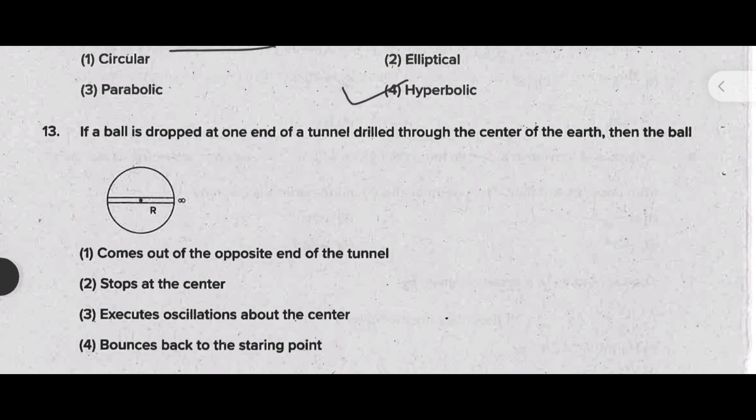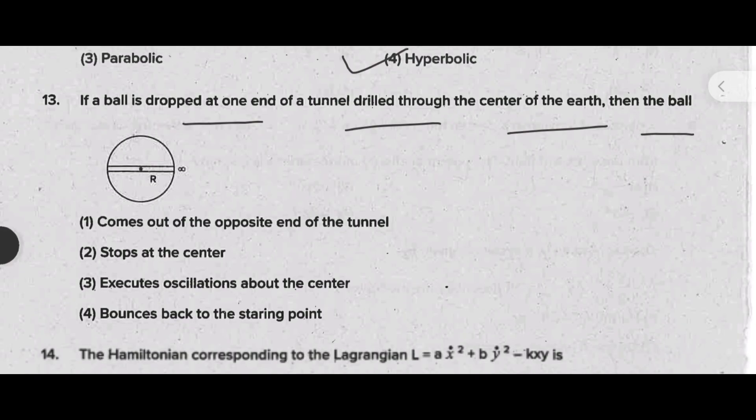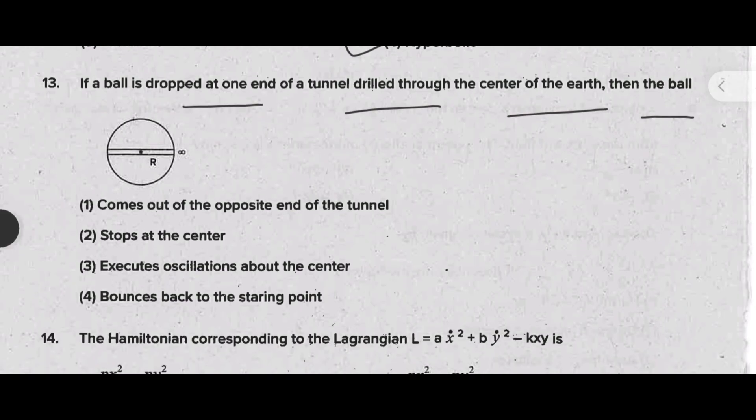If a ball is dropped at one end of a tunnel drilled through the center of the earth, then the ball - the suitable answer for this question is option 3: the ball executes oscillations about the center.